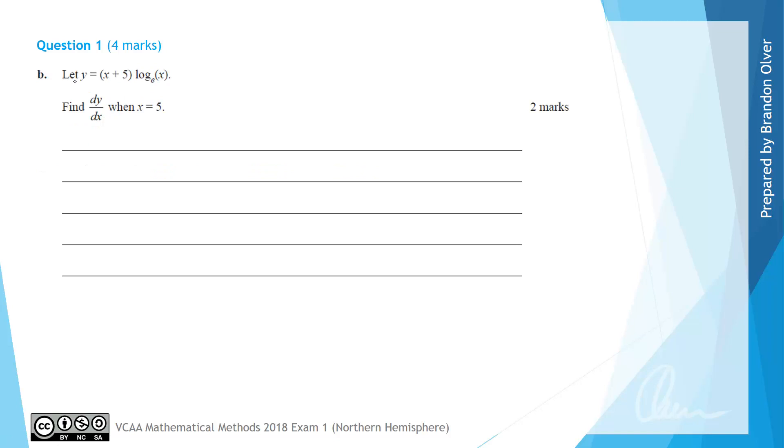For part B, we have let y equal (x + 5)·log_e(x), and we're asked to find dy/dx, the derivative, when x is equal to 5. So we can recognise that this is two functions multiplied together, so we're going to use the product rule for differentiation.